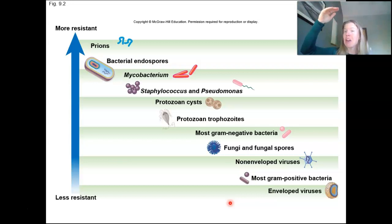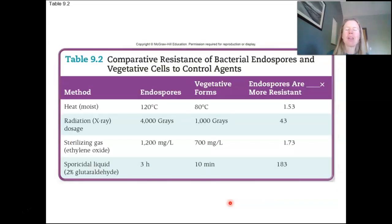And enveloped viruses, in fact, are the easiest thing to kill, which of course, SARS-CoV-2 is an enveloped virus. So it's taken that phospholipid bilayer from its host cell. But that actually ends up being a weakness because we have all sorts of things that can easily destroy a phospholipid bilayer.